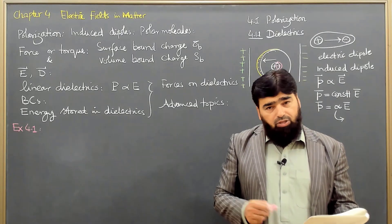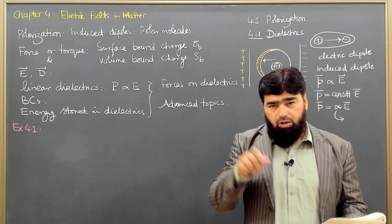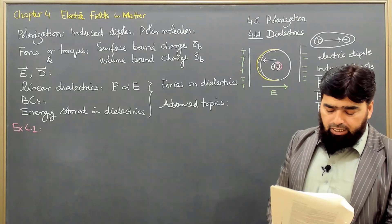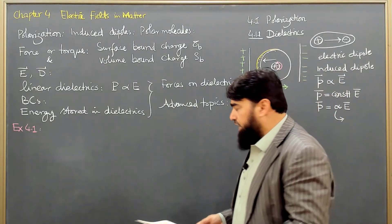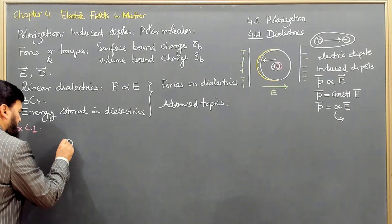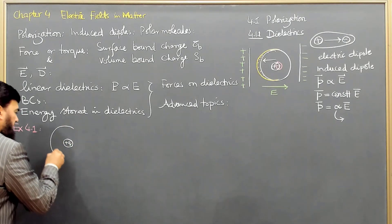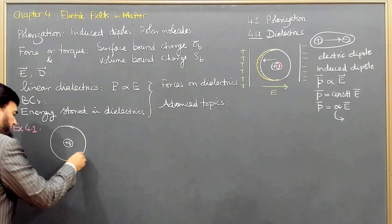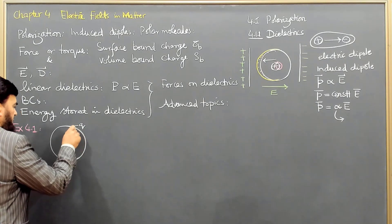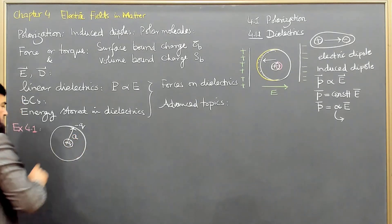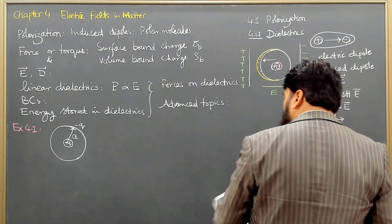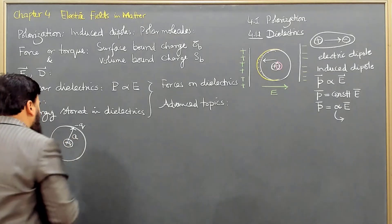So we have an atom where at the center there is a positive core with charge +q, and a negative cloud of electrons with charge −q at a distance a — the radius of this atom. The electron cloud is distributed uniformly in a sphere of radius a. We have to find the atomic polarizability.